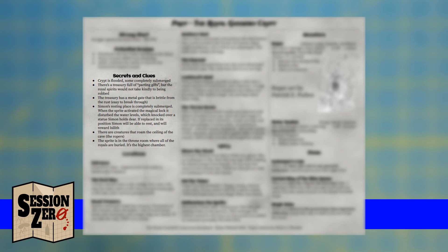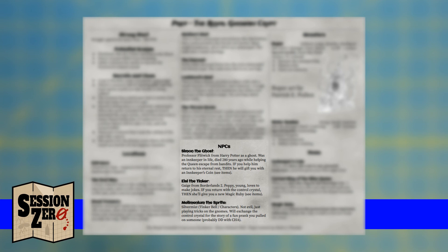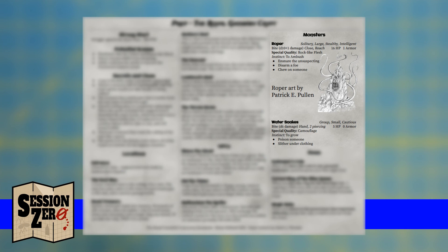Next, we develop fantastic locations. For this crypt I won't do exactly what the book says because I already have my cave locations — I just want to rename them specifically for my royal gnomish crypt and make a few short notes about what's in each chamber. The sixth step is outlining important NPCs. Simon the Ghost definitely needs a little fleshing out — no pun intended. I can also work on Elsie, and I haven't done anything with my sprite yet, so I'll do that now, using all of my context. Next, choose relevant monsters. I've already done this when I created the basic crypt — the Ropers and water snakes — so I'm just going to make sure I have their stats ready for play.